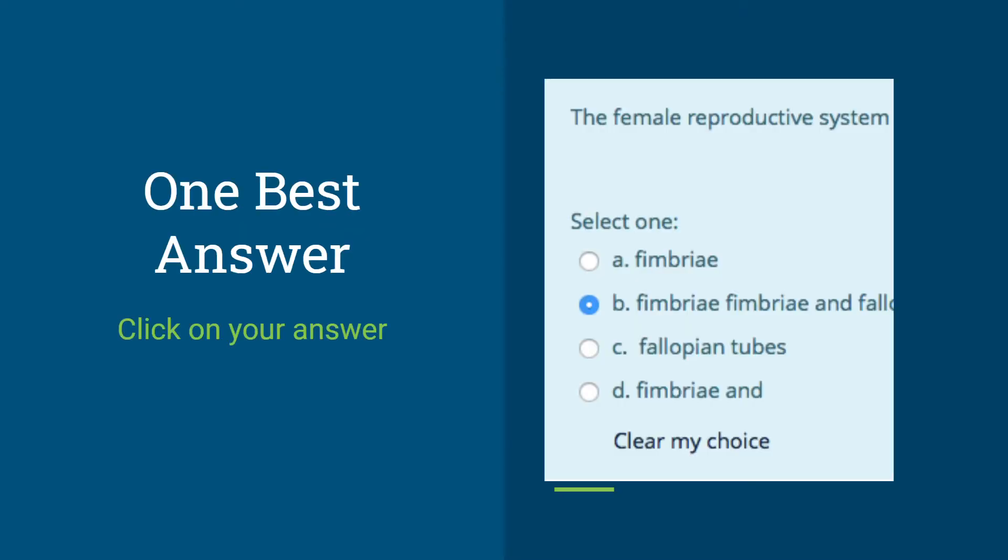One best answer questions will appear this way. There is a stem and you need to select one best answer for each of the questions. Just click on the correct answer and it will be recorded as your answer. You do not need to shade anything.